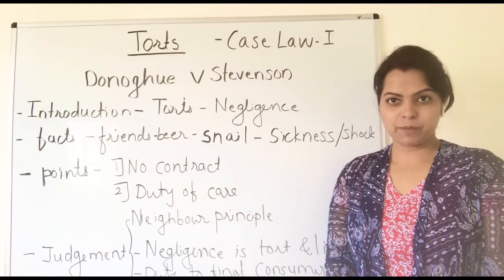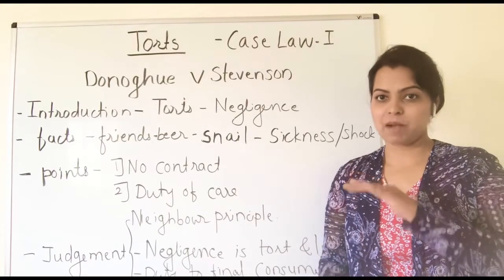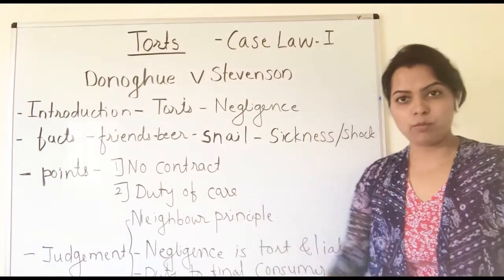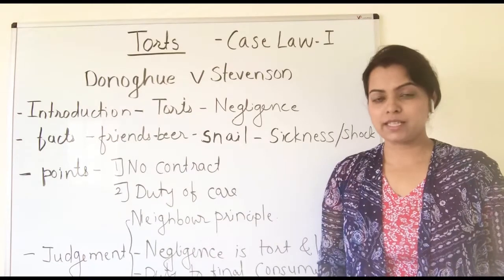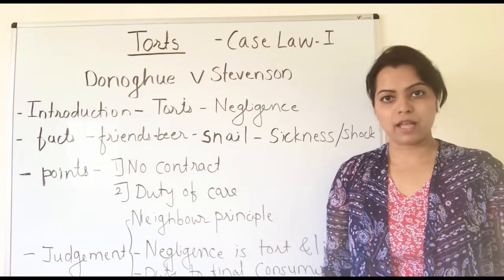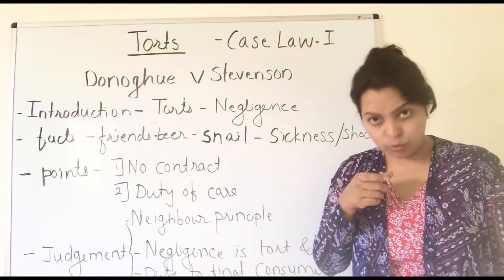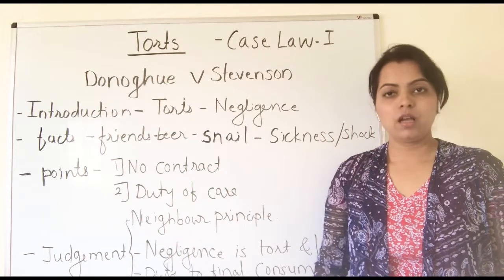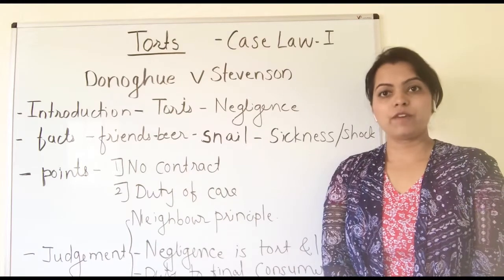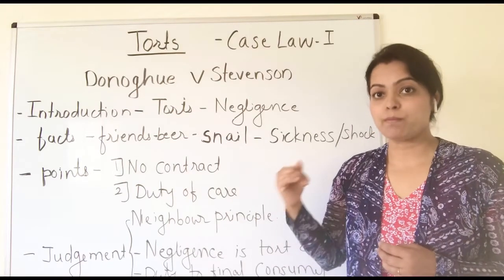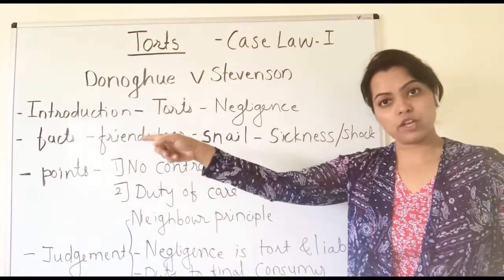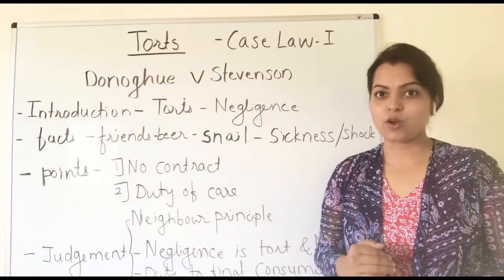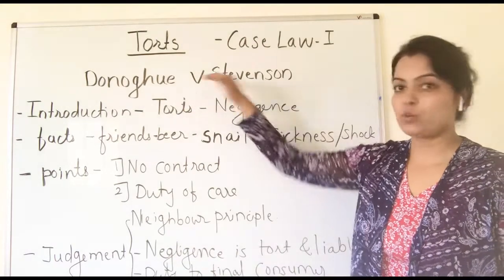Suppose you go to a shop and you purchase a bottle of Maja and you start drinking it directly from the bottle. After some time you realize something is wrong, and you take a look at the bottle and find some worms at the end. Who is liable in this case — the shopkeeper who stored the Maja bottles, or the manufacturer who manufactured Maja? Let us learn this through a very interesting case law in law of torts: Donoghue vs. Stevenson.